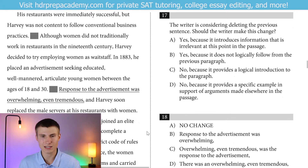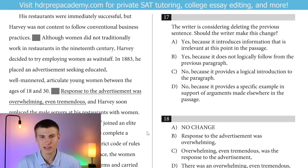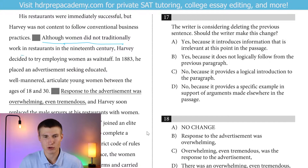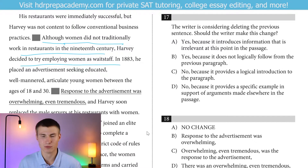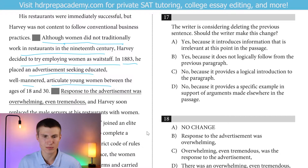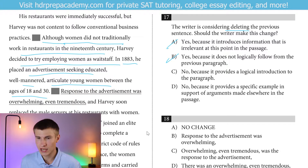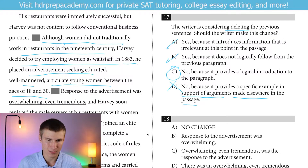His restaurants were immediately successful, but Harvey was not content to follow conventional business practices. In question 17, the writer is considering deleting the previous sentence — should the writer make this change? We need to read on to decide. Although women did not traditionally work in restaurants in the 19th century, Harvey decided to try employing women as waitstaff — that's a non-conventional business practice. This supports the idea that we should keep it. In 1883, he placed an advertisement seeking educated, well-mannered, articulate young women between the ages of 18 and 30. We have a solid introduction to the paragraph — the answer is no, the writer should not delete this because it provides a logical introduction to the paragraph.